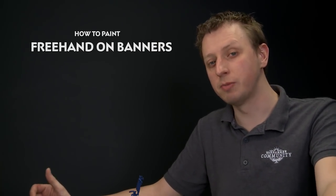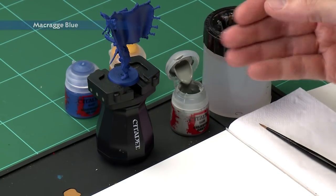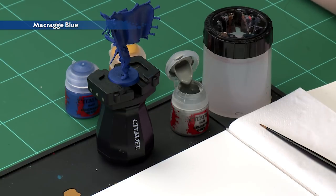Jack Darlington has been in touch to ask us for some advice on painting freehand designs on banners. So today we're going to give you some great tips and tricks of doing that by painting the design of Hallowheart on a Free Guild Soldiers banner. You can see I've got ready just here and I've undercoated him with a Macragge Blue spray as well which is the starting color for this banner.